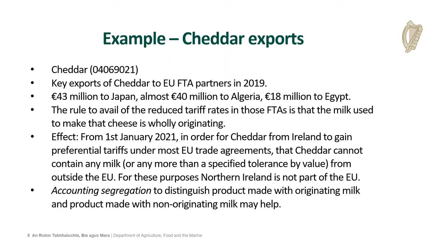Cheddar is another key export to examine — one of Ireland's major dairy exports to existing EU FTA partner countries. In 2019, Irish cheddar exports to FTA partner countries included 43 million euros to Japan, almost 40 million to Algeria, and another 18 million to Egypt. The product-specific rule in each case is the same: the milk used to make the cheddar must be wholly originating. This is likely to be particularly problematic given that Ireland sources around 800 million litres of milk per annum from Northern Ireland, which will not be part of the EU customs territory after the end of the transition period. Accounting segregation — which allows fungible material including milk to be tracked in inventory management systems even if originating and non-originating milk was physically mixed — may not be suitable for all businesses but is certainly something to explore.